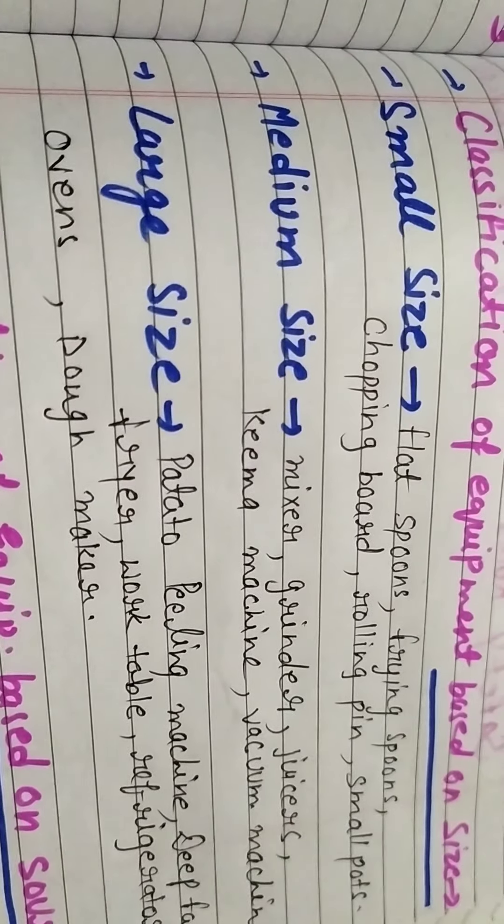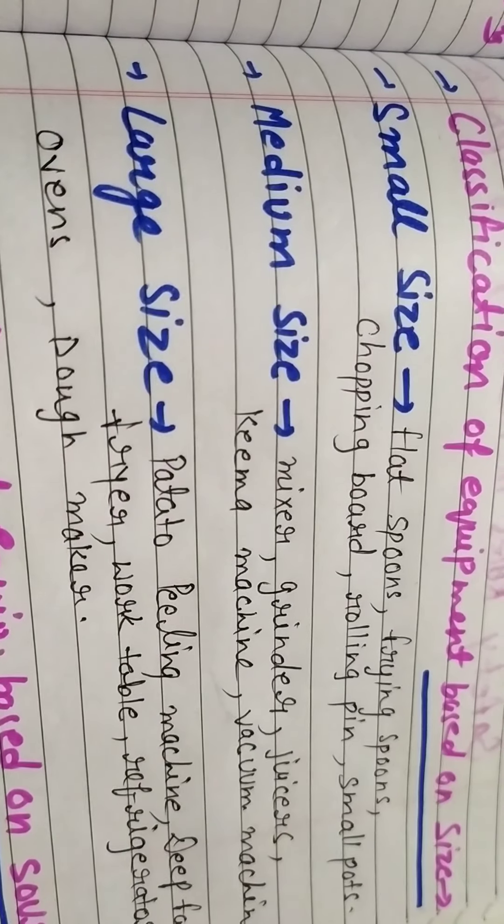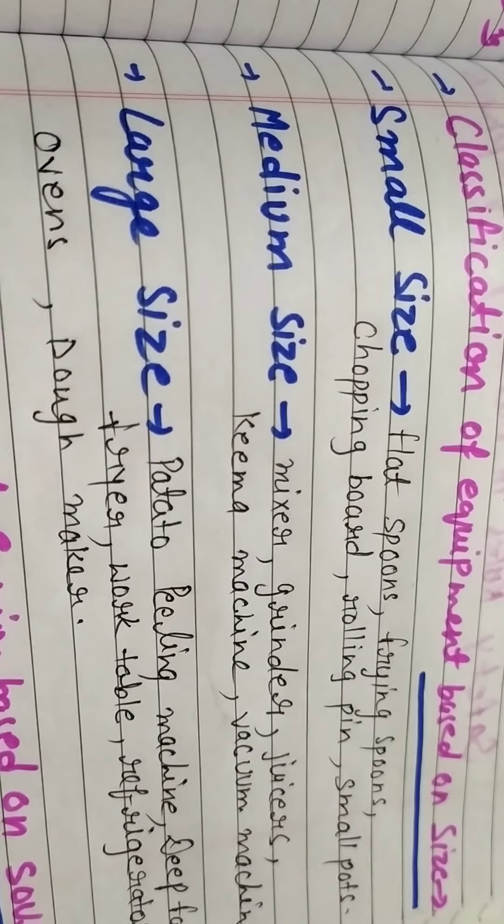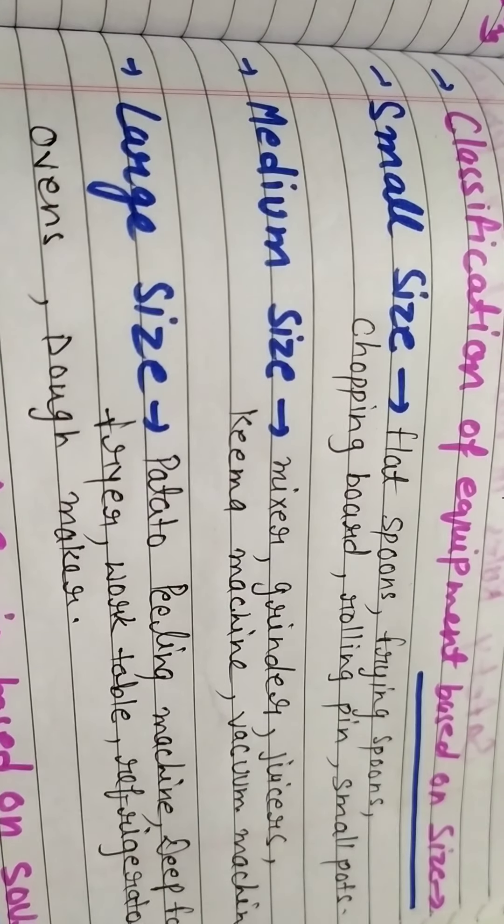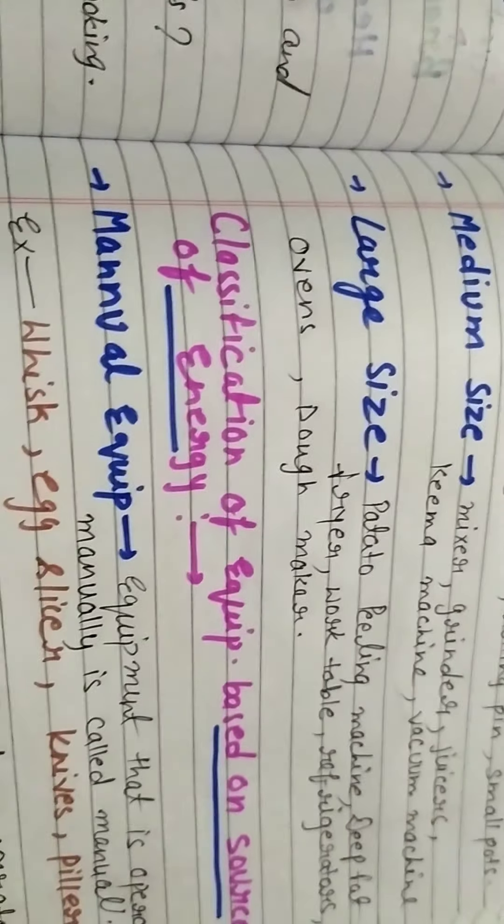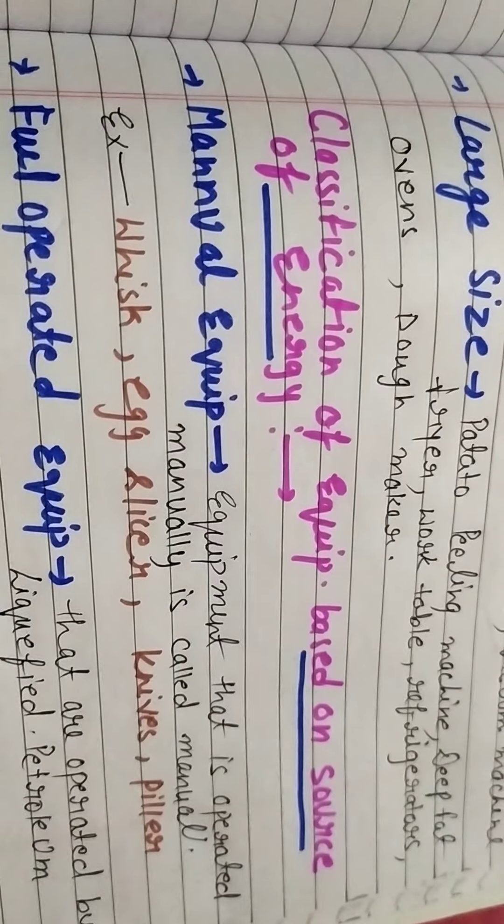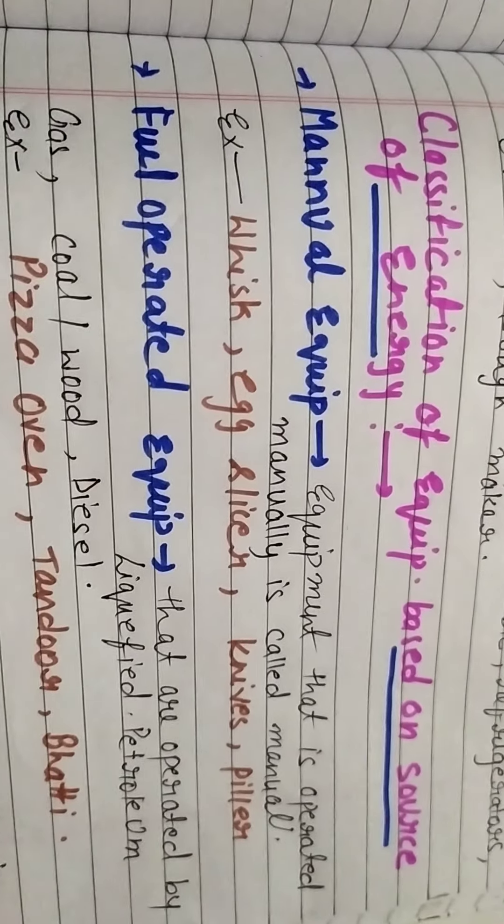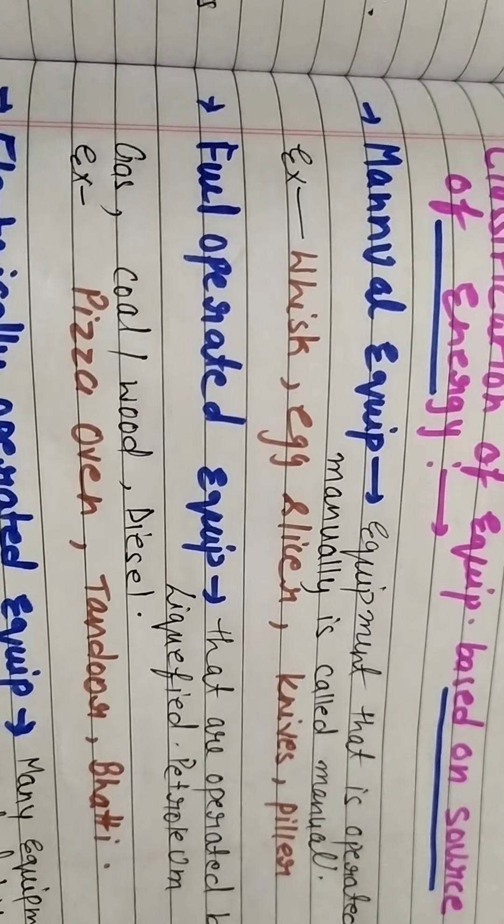In this chapter we discussed two types of classification. First is based on size: small, medium, and large. Second is based on source of energy: manual, fuel, and electricity.